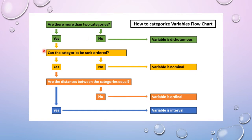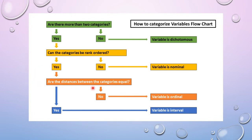If there are more than two categories, you move to the next step: can the categories be ranked or ordered? If they cannot be given any order, that variable is nominal data — as in the example of five numbers for five feelings of favorism. If we can give an order, we move to the next step.